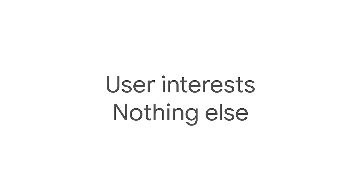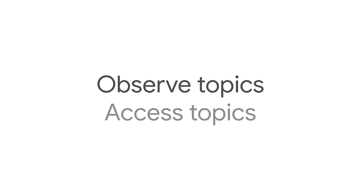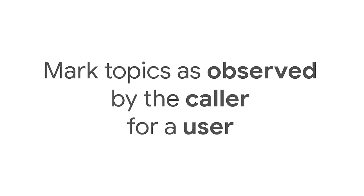Having recorded the topics of interest for a user, Topics needs to provide access to them to third parties, but without revealing anything else about the user's browsing activity. A third party that wants to know the topics of interest for a user — such as an ad tech platform — is known as a caller, since this is the party that calls the API. For a caller, there are two stages to using Topics as the user navigates the web: the caller observes topics and then accesses them. The caller needs a way to tell the browser that they wish to mark a topic as observed for the current user. Topics chooses only from observed topics when selecting which topics to share when the caller uses the API to access topics.